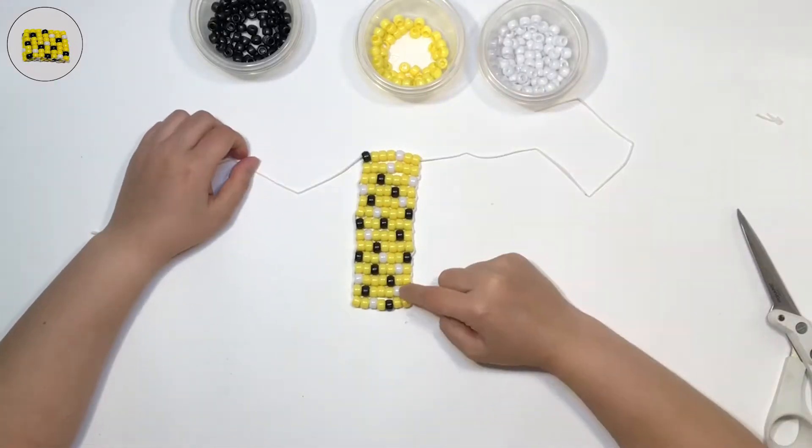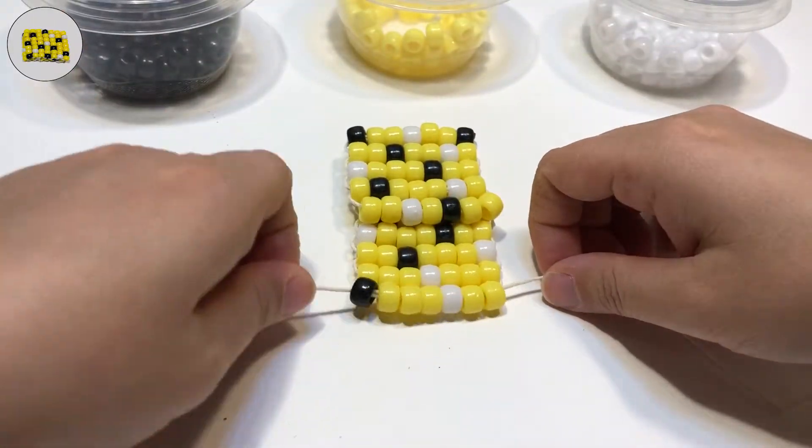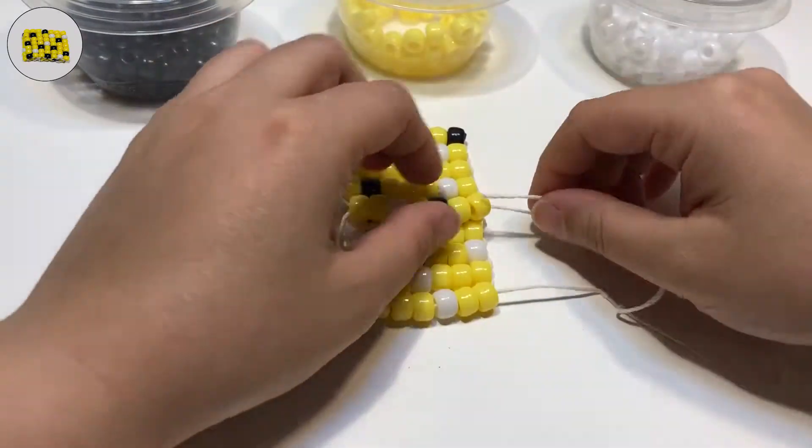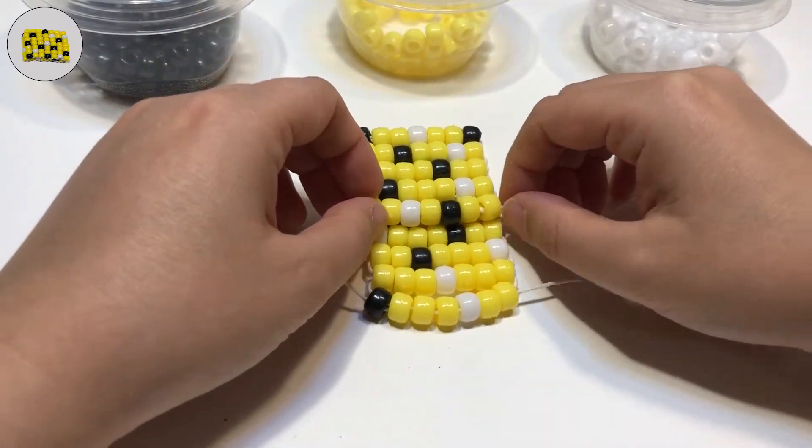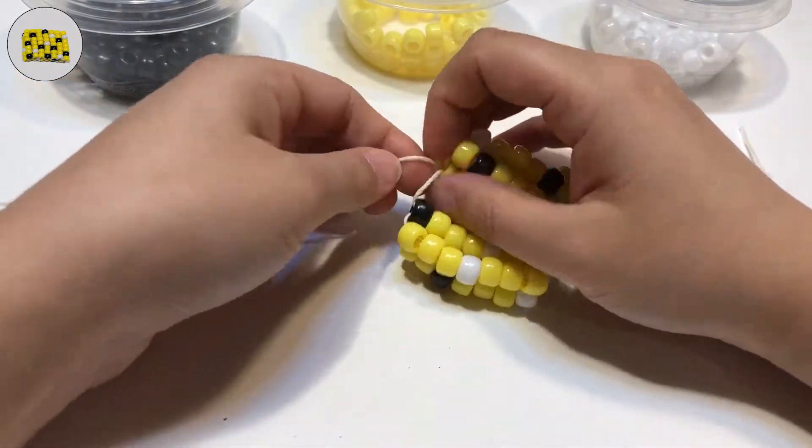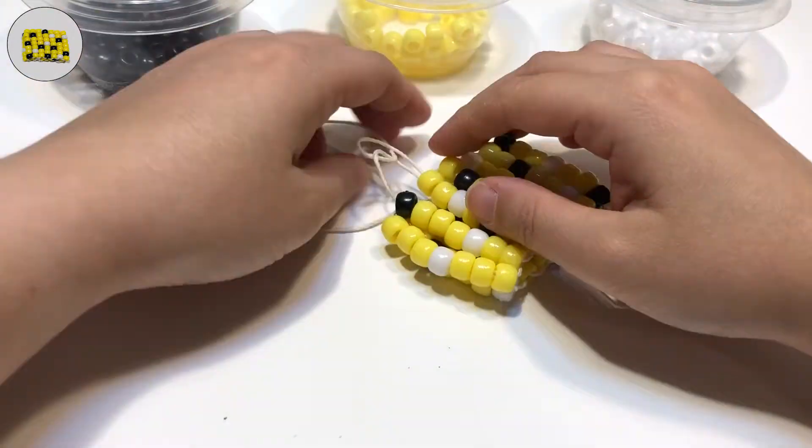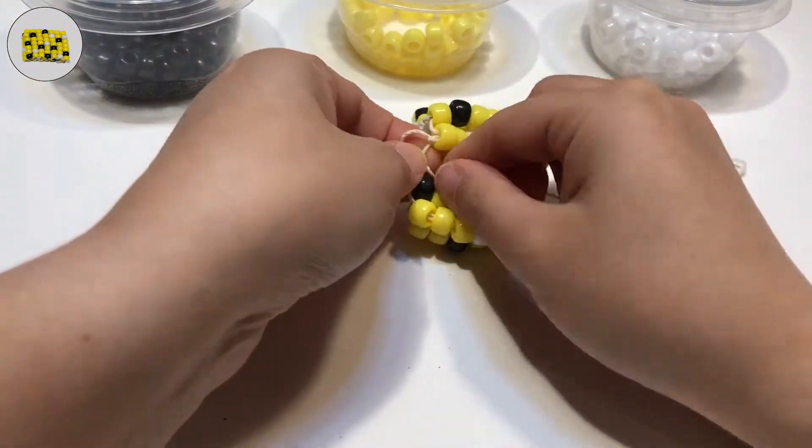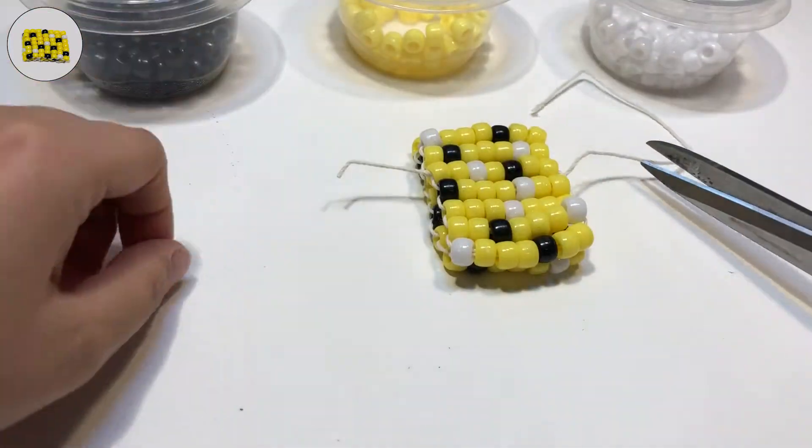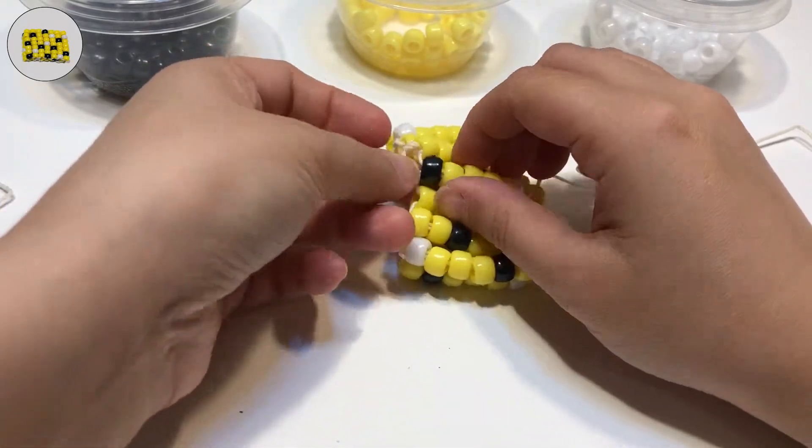Step three: close the ring. Flip the beads onto themselves and feed both ends of the string into the first row of beads in order to create a complete ring. Pull the string tight and create a double knot on each side to prevent the beads from becoming undone. Then cut the ends, leaving a little bit of extra that you can hide into the next row of beads.